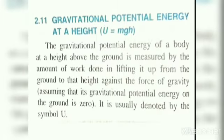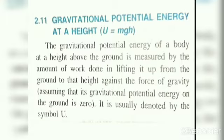The gravitational potential energy of a body at a height above the ground is measured by the amount of work done in lifting it up from the ground to that height against the force of gravity. We assume that the gravitational potential energy on the ground is zero. It is usually denoted by the symbol U.